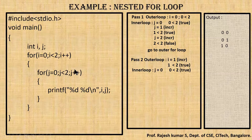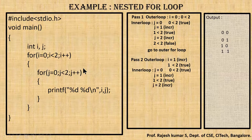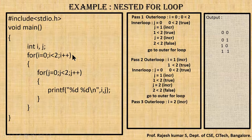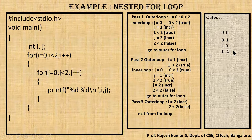j increments to one. One is less than two — true. The print statement executes: i is one, j is one, so '1 1' is printed on the monitor screen. j increments to two. Two is less than two — false. We come out of the inner for loop and go to the outer for loop. i increments to two. Two is less than two — false. We exit the nested for loop. The output on screen is: 0 0, 0 1, 1 0, 1 1.